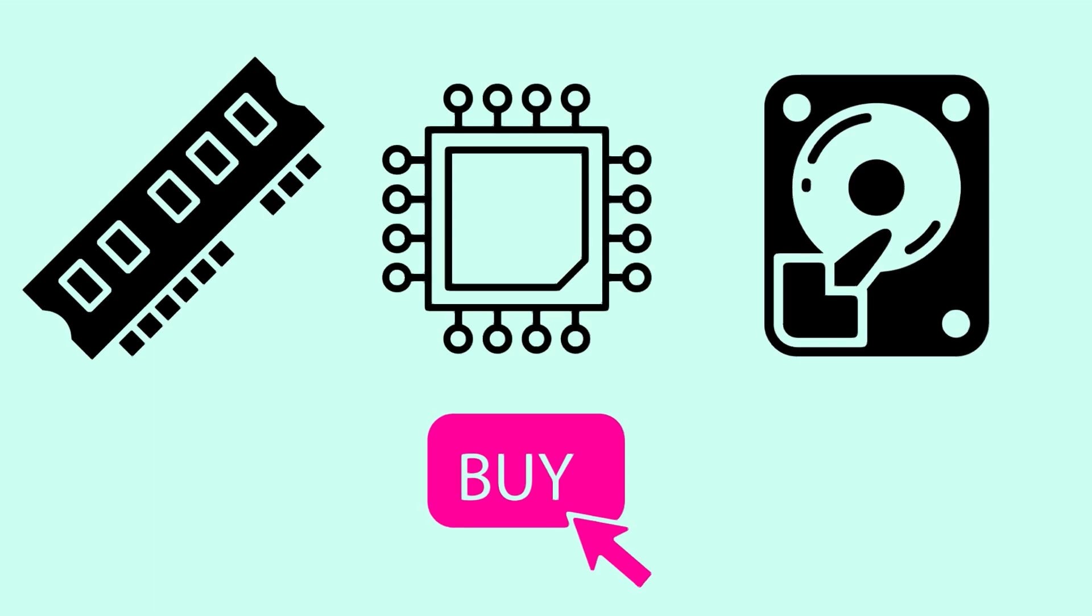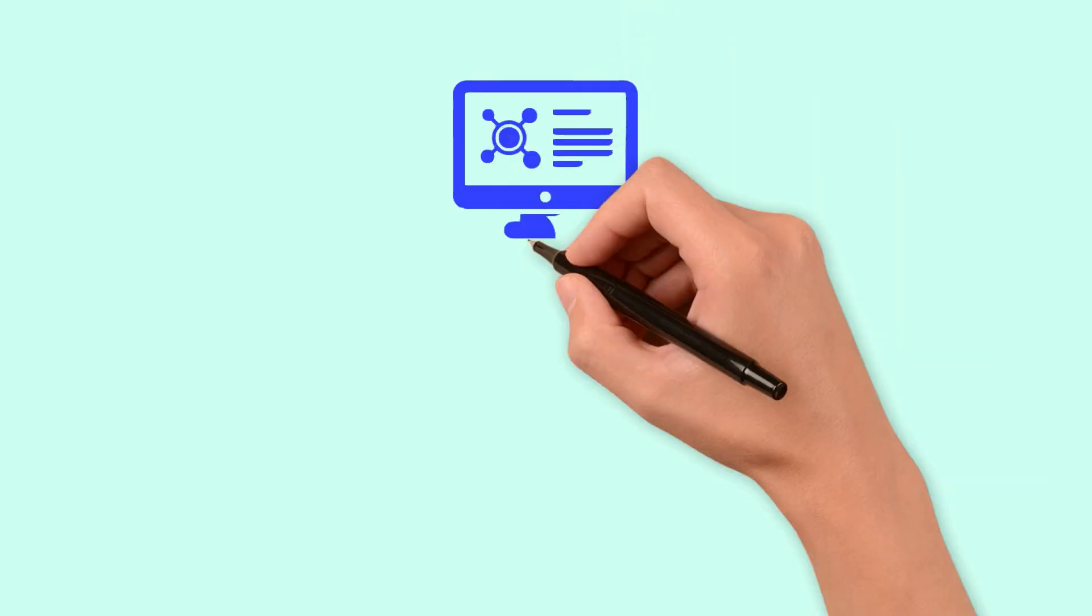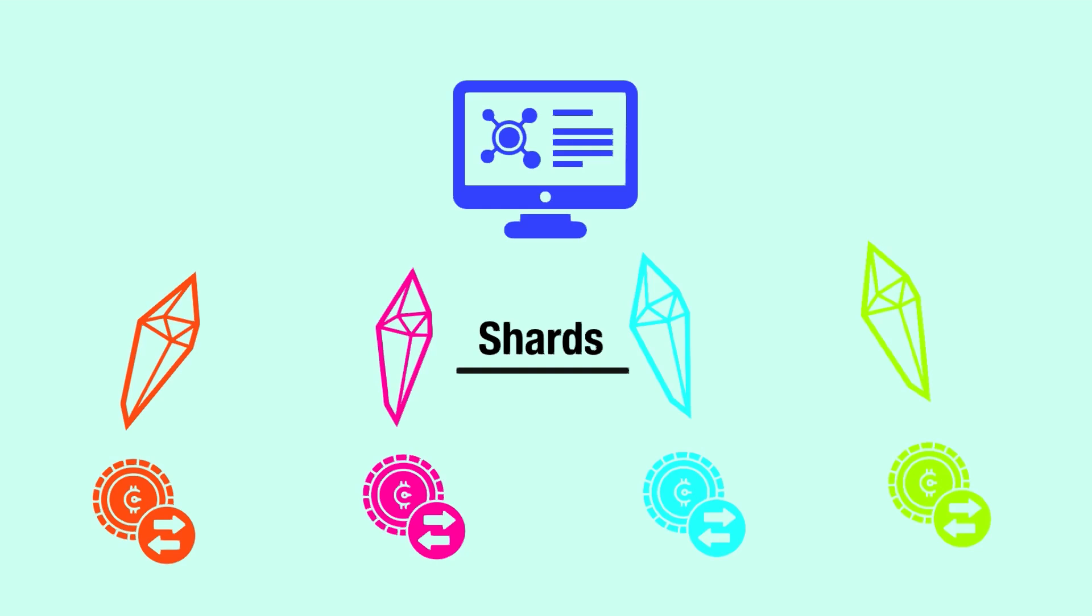To avoid such compromises, a new solution has emerged: Sharding. Sharding breaks the network into smaller, independent partitions called shards, allowing for more parallel transaction processing. This innovation aims to balance all three trilemma properties.